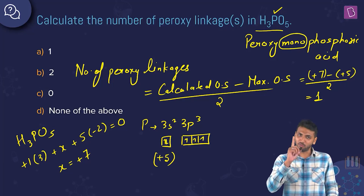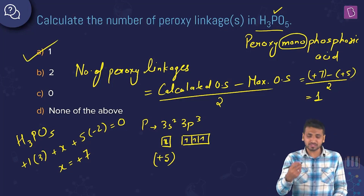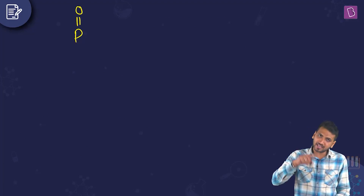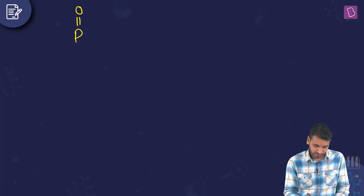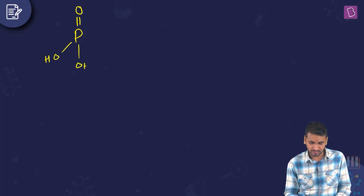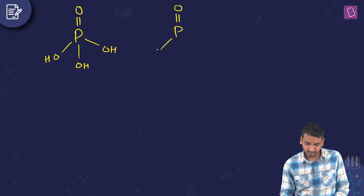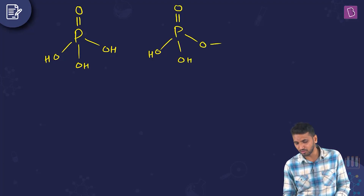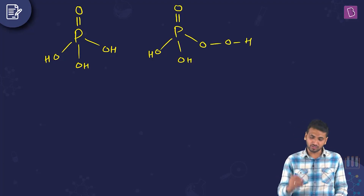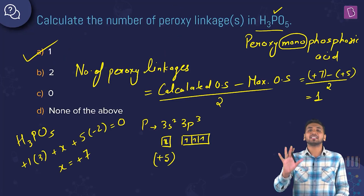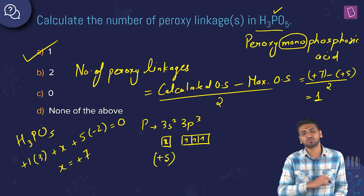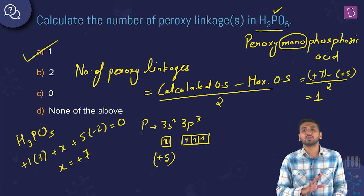The answer is one — that's the importance of the 'mono' in peroxy monophosphoric acid. H₃PO₅ is a derivative of H₃PO₄ (phosphoric acid). Phosphoric acid has three OH groups and one double-bond O. H₃PO₅ has one peroxo linkage where oxygen has oxidation state −1. The answer is option A.